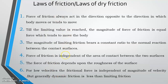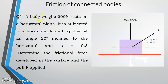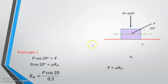Now a numerical problem: a body weighing 500 N rests on a horizontal plane. It is subjected to a horizontal force P applied at an angle of 20 degrees to the horizontal, with coefficient of friction mu equals 0.3. Determine the frictional force F1 and the applied pull P. Weight acts downward; resolve P into horizontal and vertical components.